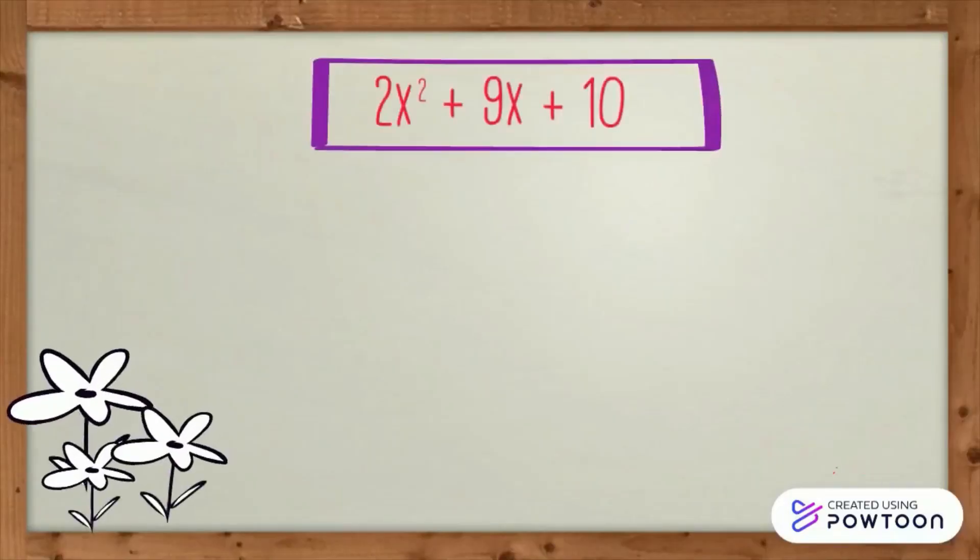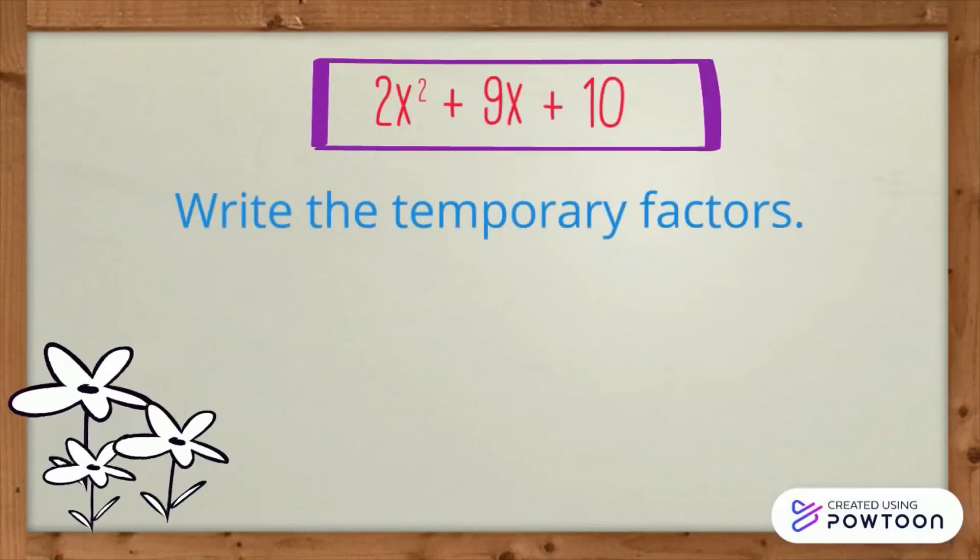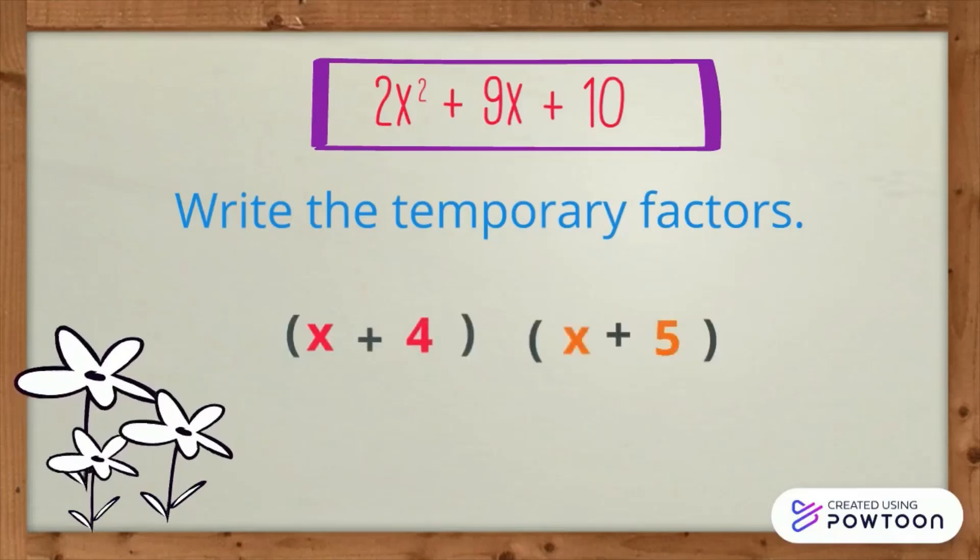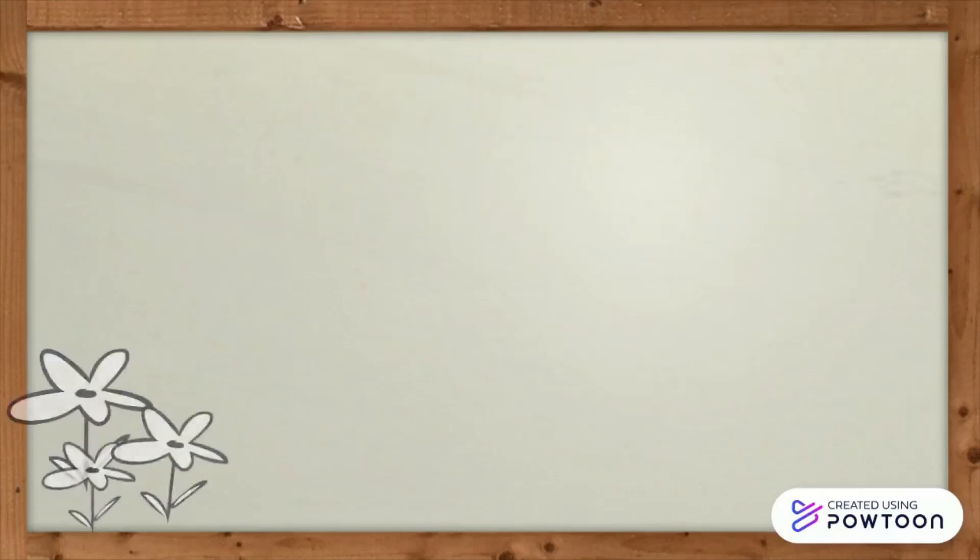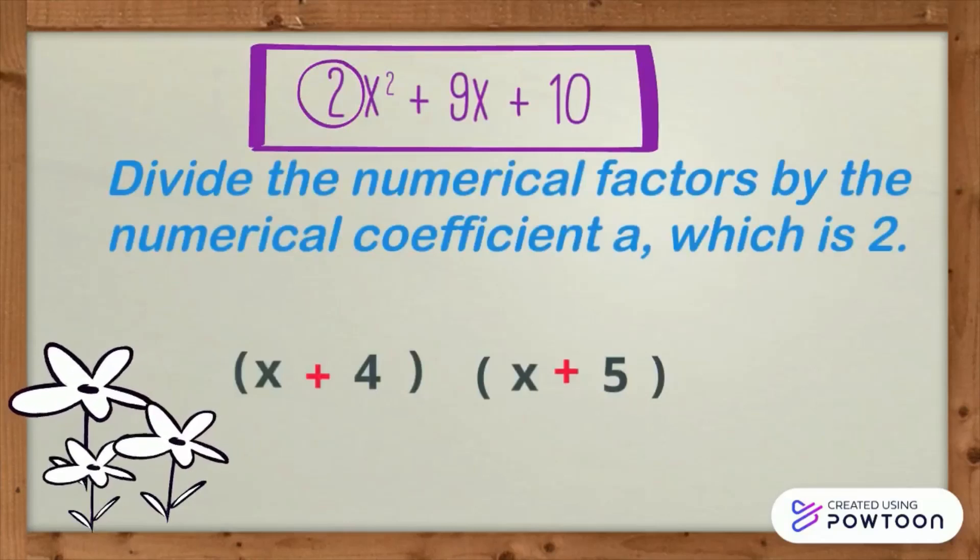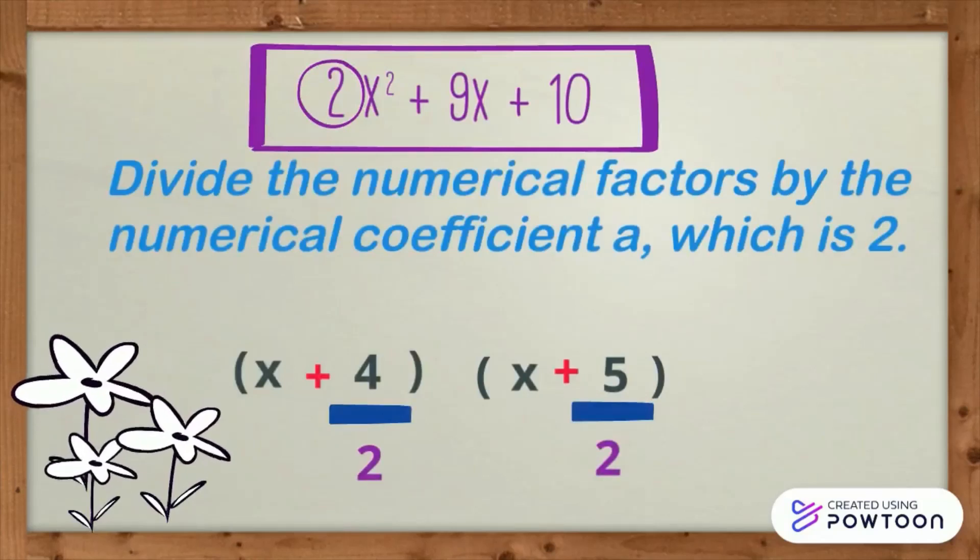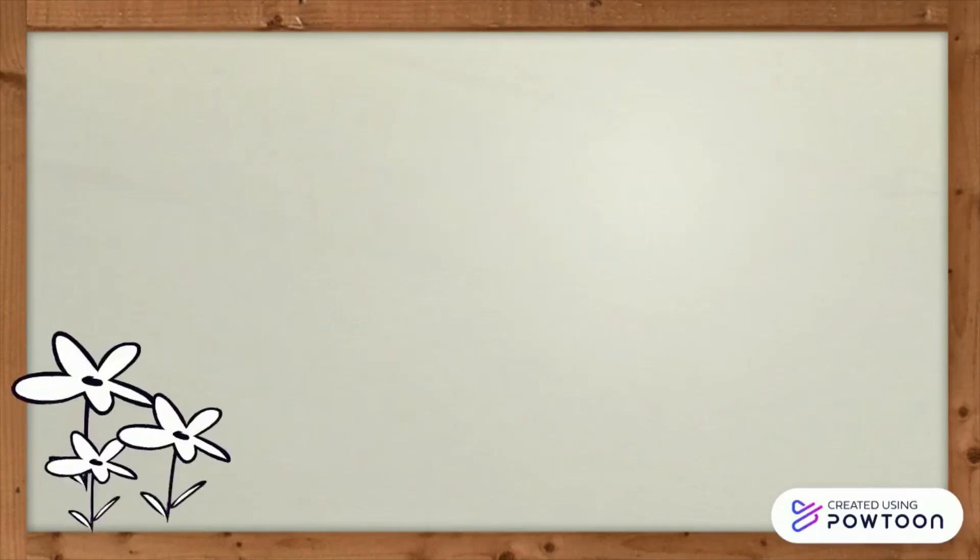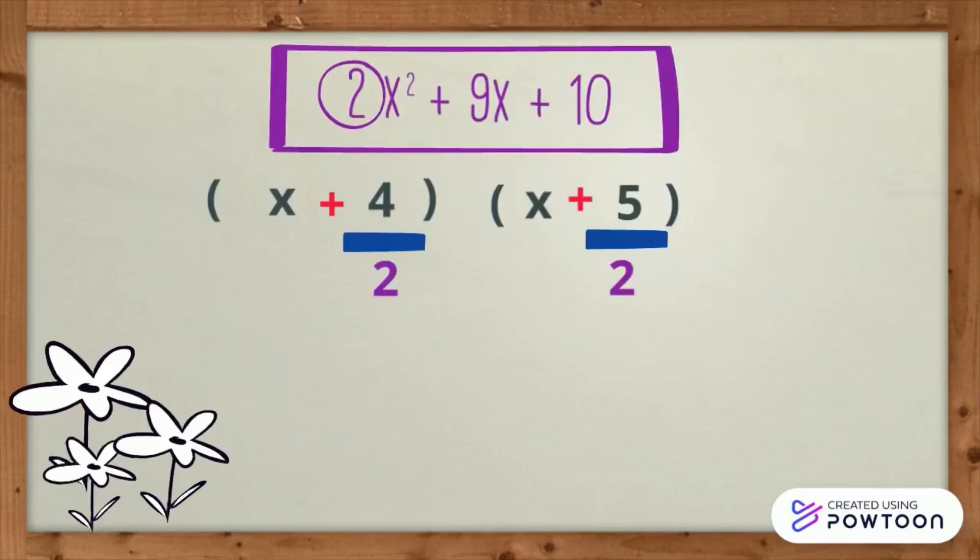The next step is for us to write the temporary factors. These are x plus 4, x plus 5. Divide the numerical factors by the numerical coefficient a, which is 2. And check that out. 4 divided by 2 equals 2.